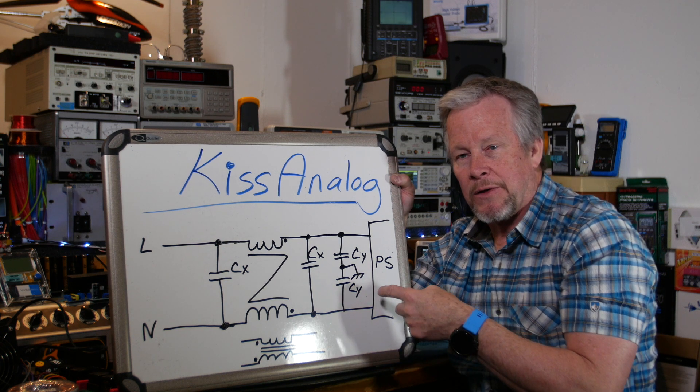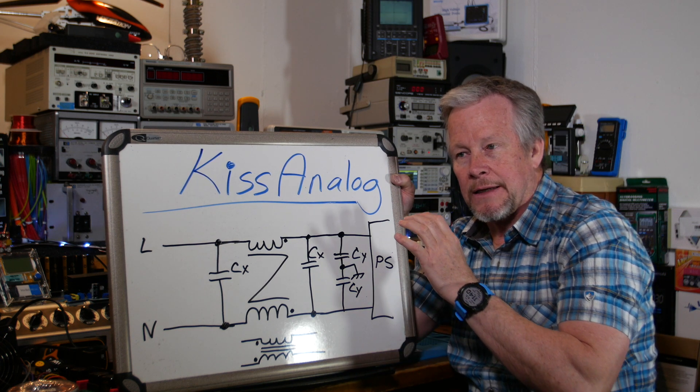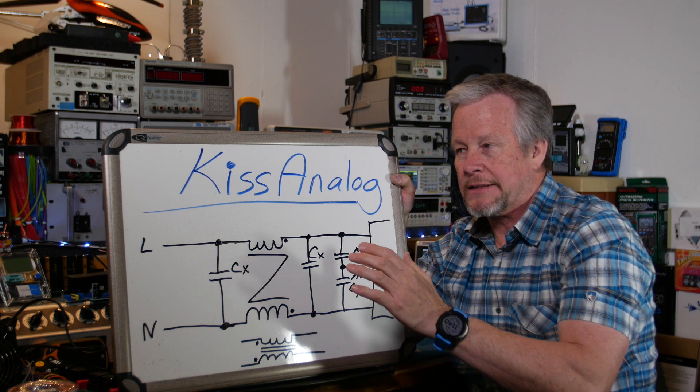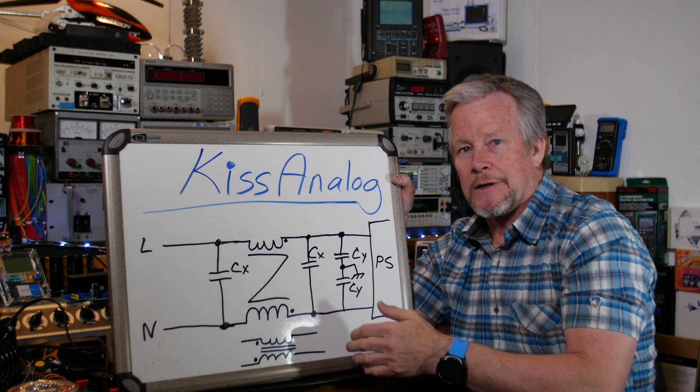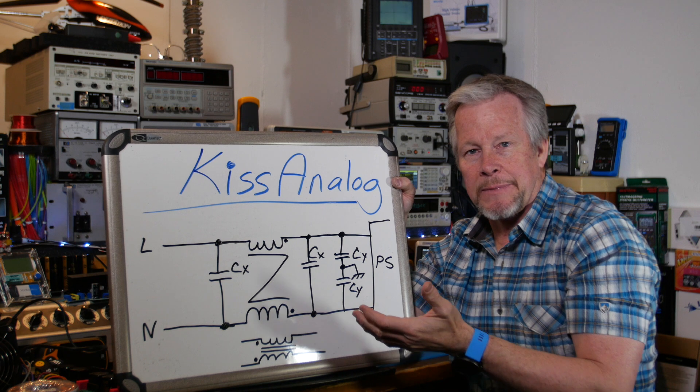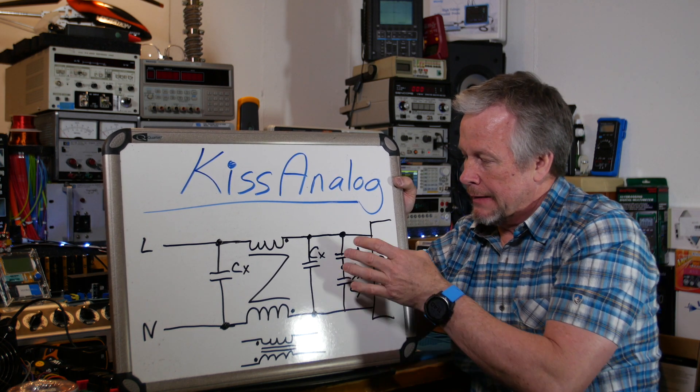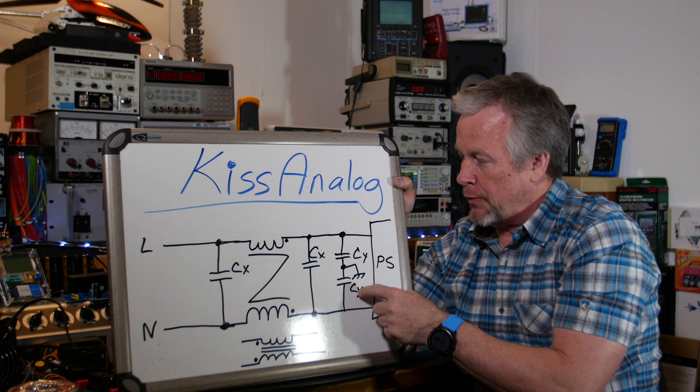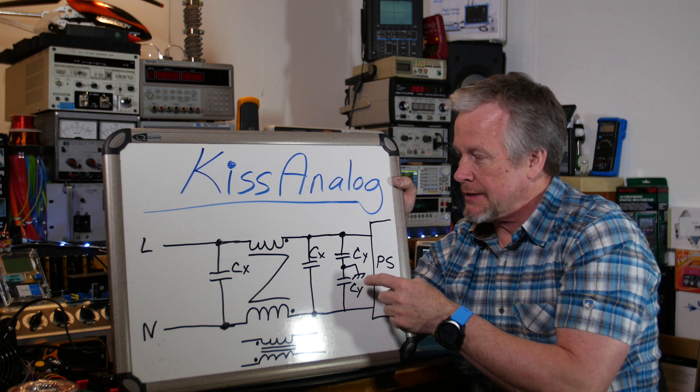If it's over half a milliamp, you normally need a sticker on the thing saying that this current is over, you know, it can be three milliamps.